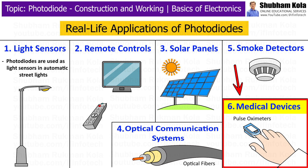The next application is medical devices. Photodiodes play an important role in medical equipment. For example, in pulse oximeters, which measure the oxygen level in your blood, photodiodes detect the light passing through your finger or ear lobe. The amount of light absorbed by the blood gives information about the oxygen level, which is then displayed on the device.